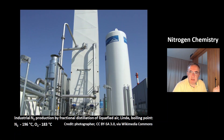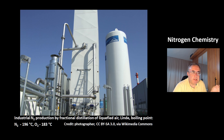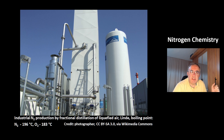This is how industrial nitrogen is produced by fractional distillation of liquefied air. This is a factory from the company Linde. It makes use of the fact that nitrogen has a lower boiling point of minus 196 degrees Celsius compared to oxygen, which is minus 183 degrees Celsius. The reason is the oxygen molecule has a higher molecular mass, and that's why it has a higher boiling point.